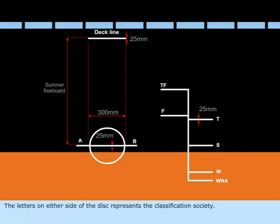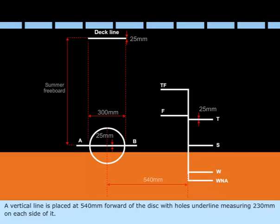A vertical line is placed at 540mm forward of the disk with horizontal lines measuring 230mm on each side of it.